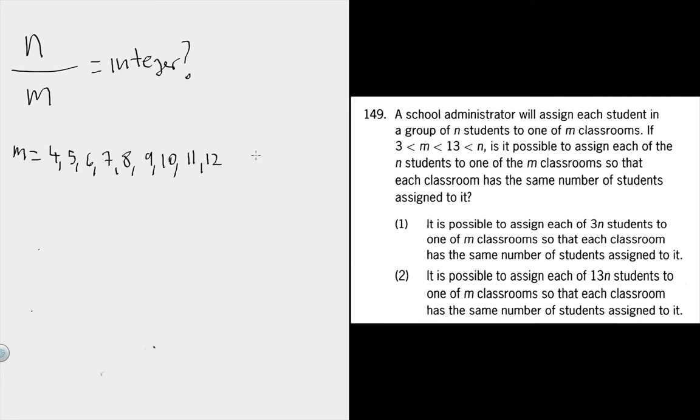And we know that n is greater than or equal to 14. Statement 1 tells us that 3n over m is an integer.